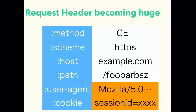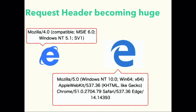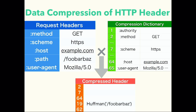Here are some examples. The left browser is IE6 — its user agent is very simple. But the right browser is a modern one, with a very long user agent header. HTTP/2 can compress such headers. This diagram shows header compression: HTTP/2 has a dictionary table which can compress the headers, reducing the size.